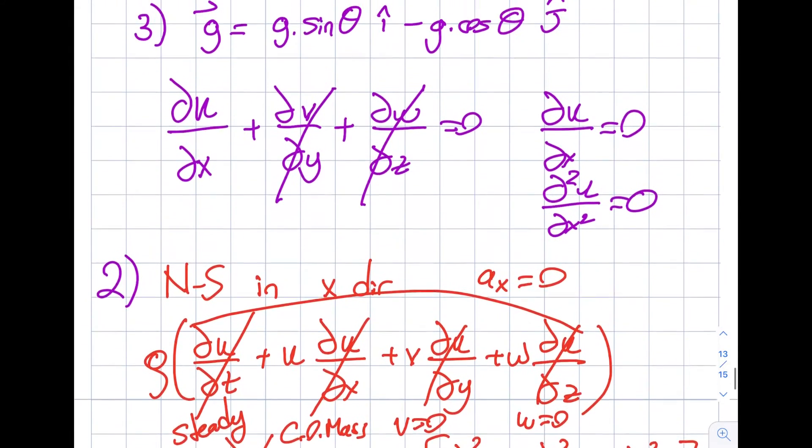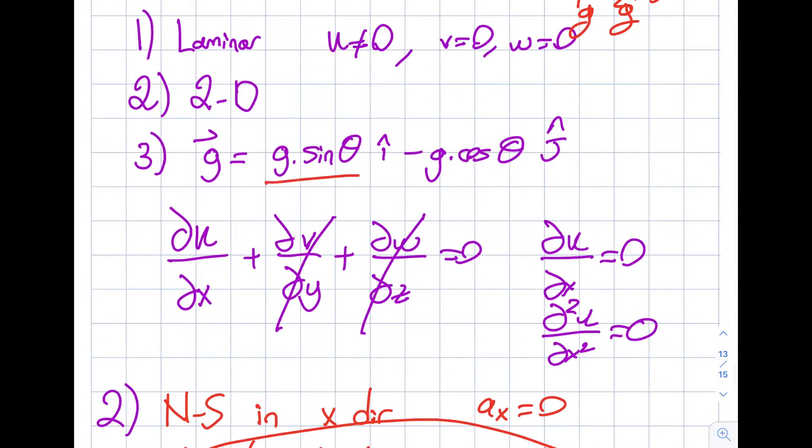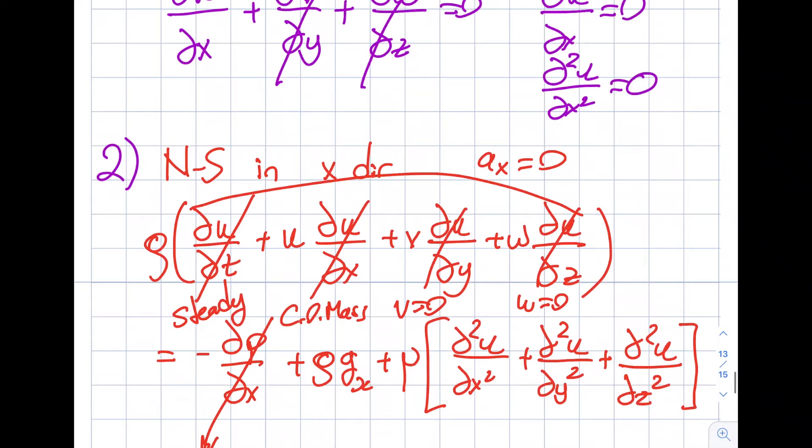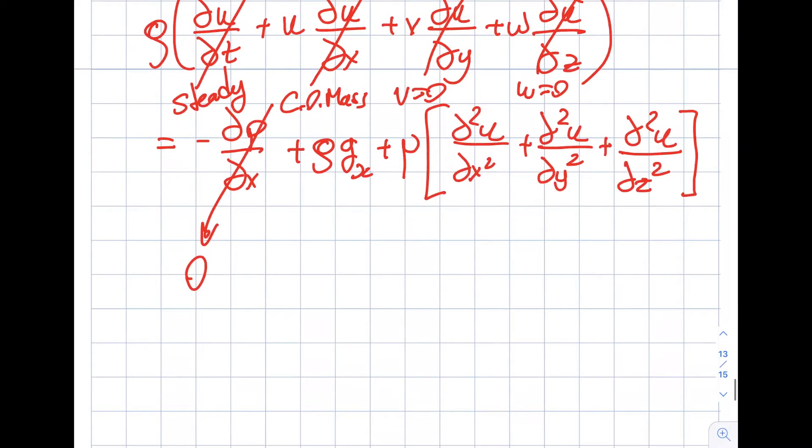Rho g_x will not be able to get rid of because it's right over here, actually g sine theta. So this will be g sine theta. Del square u del x square is conservation of mass. Del square u del z square is from 2D. Del square u del y square is exactly what I'm looking for, so I'm not gonna eliminate that.